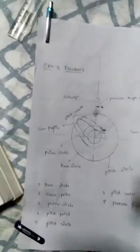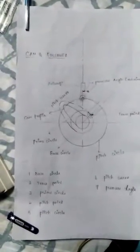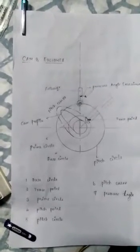Now there is a pressure angle. Now we are going to see some important definitions. Base circle. It is the smallest circle tangent to the cam profile drawn from the center of the rotation of radial cam.